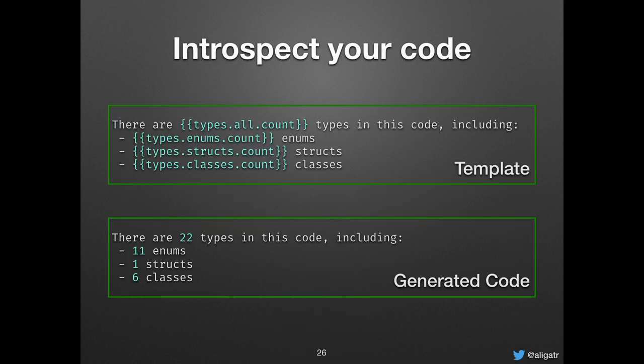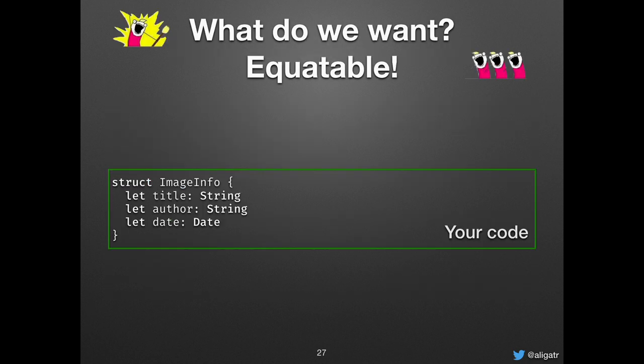One simple thing you can do with Sorcery is not even generate Swift code but just use it to introspect your code. There's a very simple template that lets you see how many structs, enums, and classes you have in your project. You can imagine generating HTML that lists all the types in your codebase. It can help you get a grasp of a new project with legacy code when you want a different view of how it's structured.